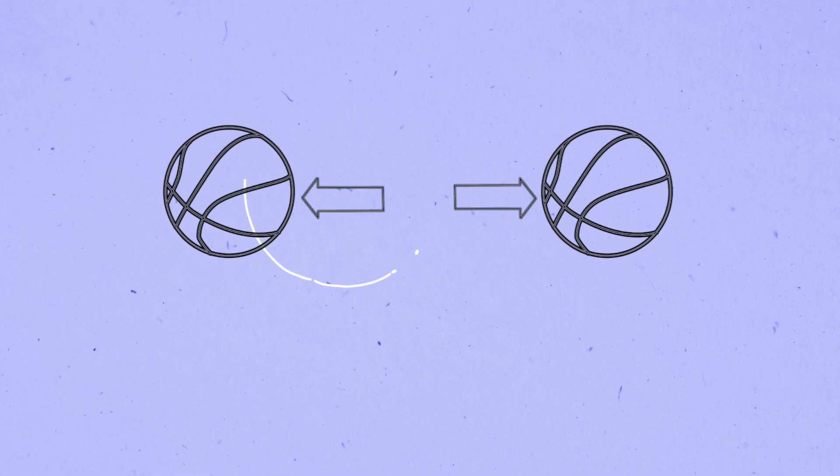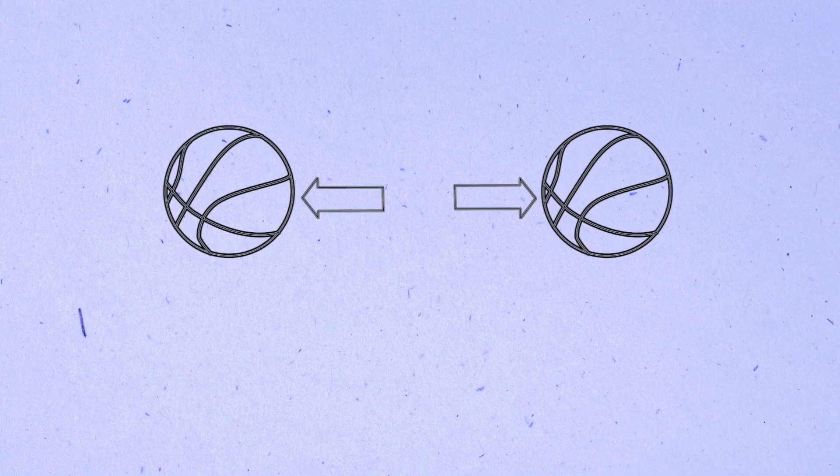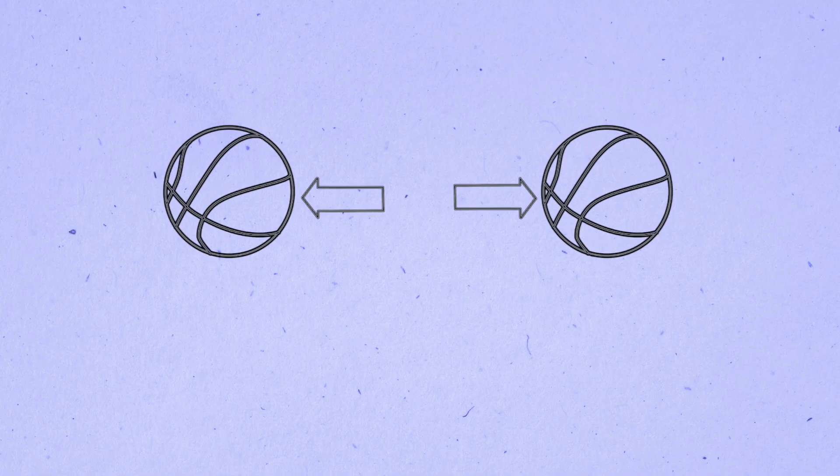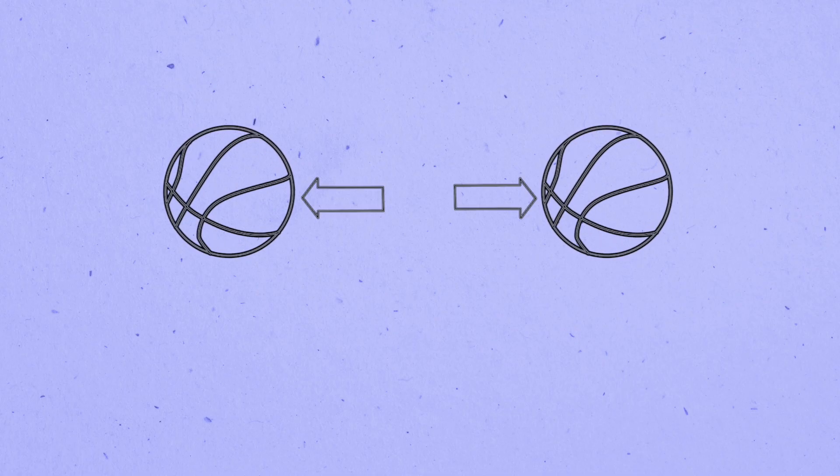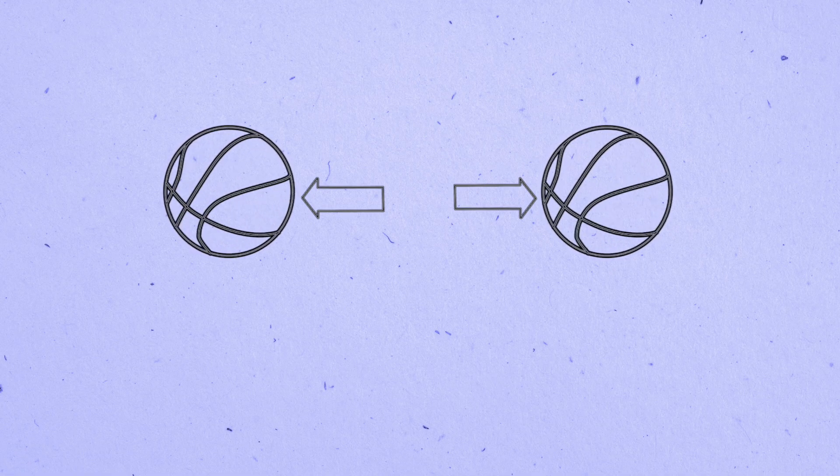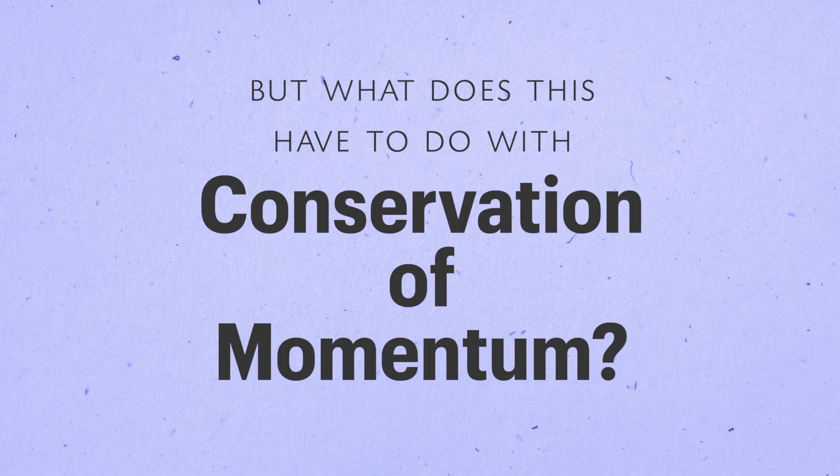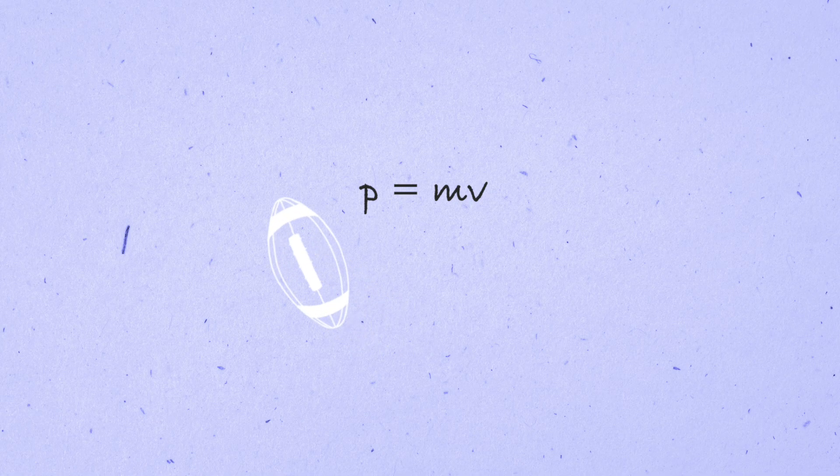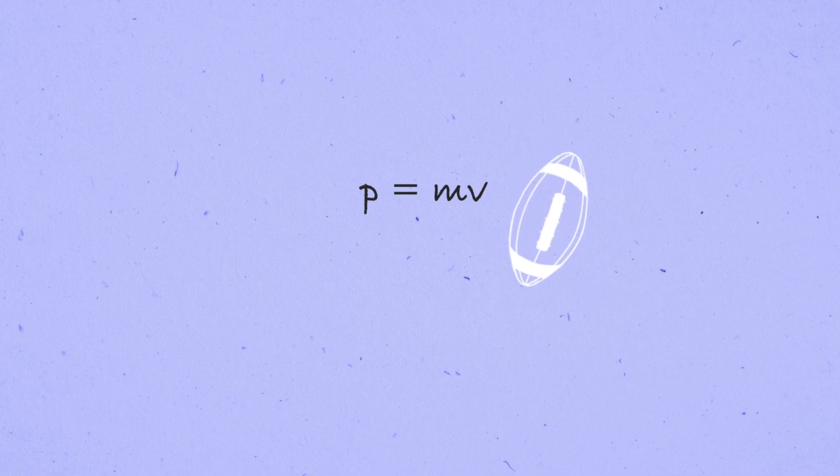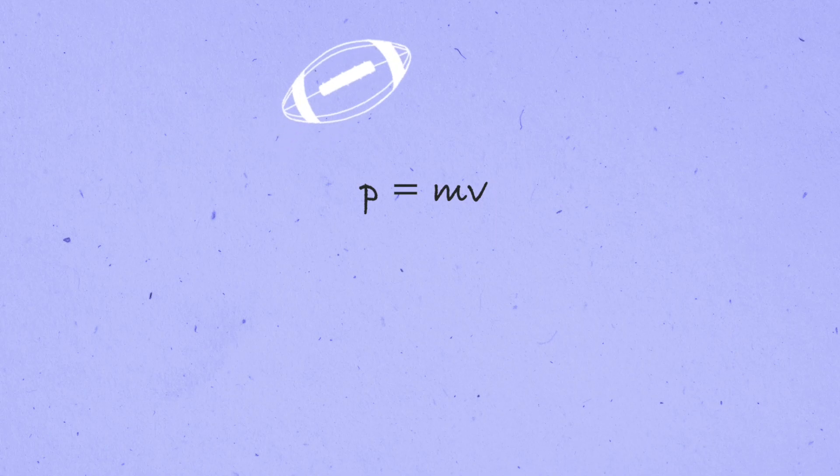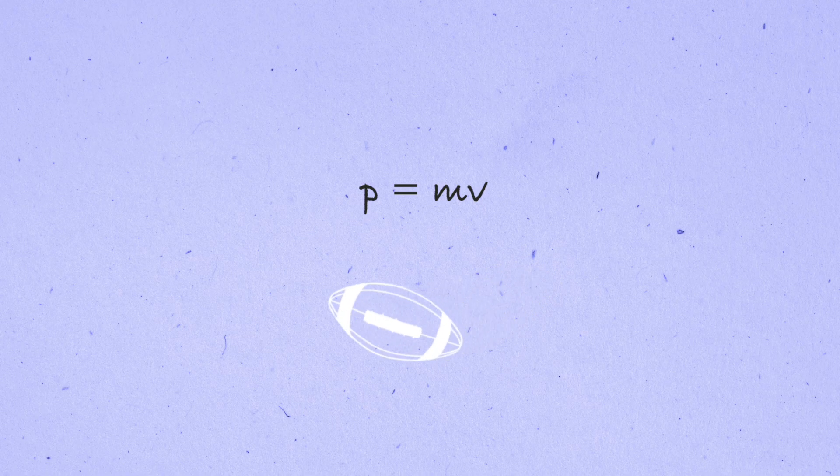For any force we find acting on the left particle, Newton asserts there'll be another force acting on the right particle, of the same magnitude but pointing in the opposite direction. Now, what does this have to do with conservation of momentum? Well, remember that momentum is a mathematical way of quantifying how much motion an object has. And it's defined by multiplying the velocity of a particle by its mass.